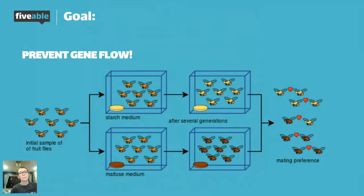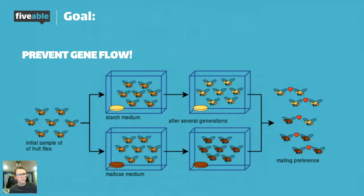Scientists actually keep them in captivity with their separate food sources, and after several generations, they bring them back together and they won't mate anymore, which is pretty crazy — just based off of the food source. So it must be some sort of smell or something that the flies are emanating based on their food source, keeping the maltose-eating flies with the maltose-eating flies and the starch-eating flies with the starch-eating flies.